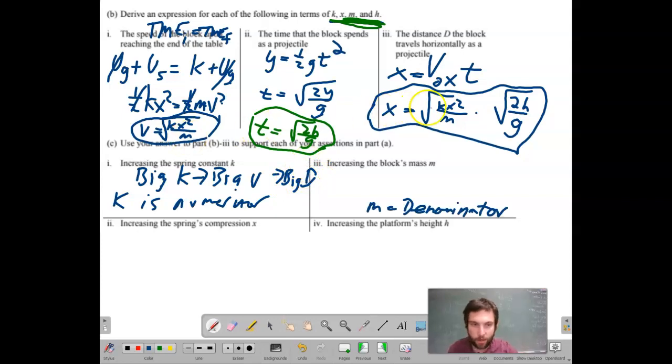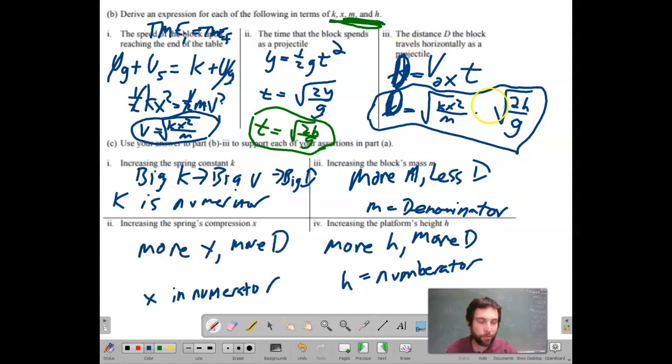Now, if we increase m right here, m is in the denominator. So that means more m, less distance. All we're doing is analyzing what's happening with our equation. I noticed a problem. Sorry, this should not be x. This should be d. Capital D, right? How come you didn't yell at me? And the last two are both in the numerator. So if you make those two bigger, that means displacement becomes bigger.